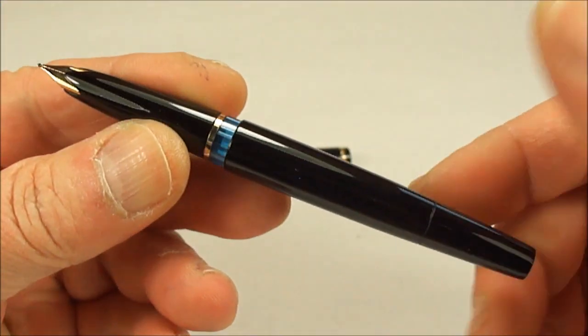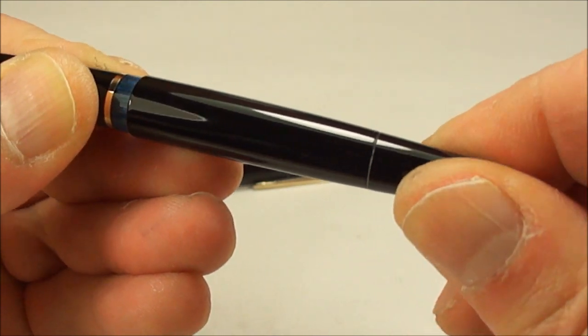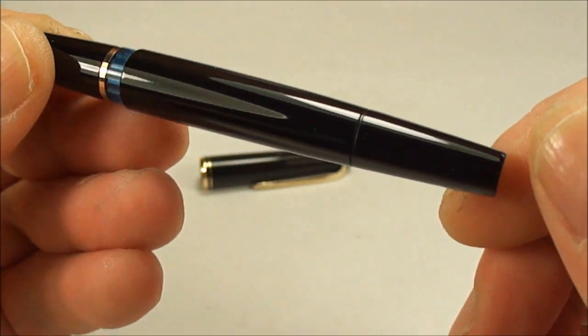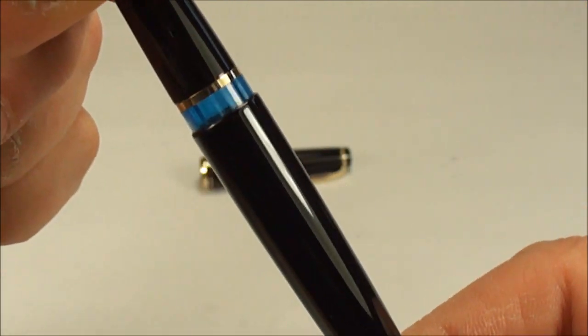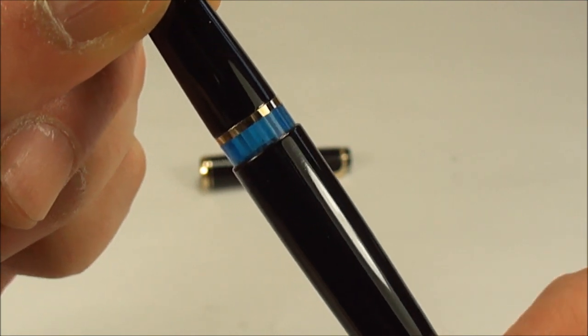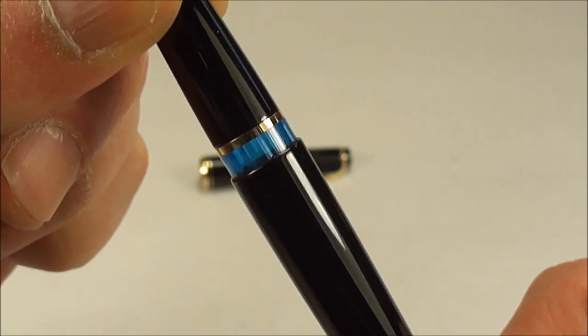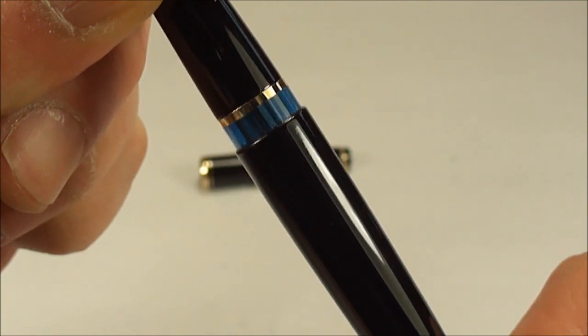As we said earlier, this is a piston filler, which means what we do, we simply, well, say is here, is turn the piston knob at the end here. And then if we show you the ink view, there, and we turn the piston in a moment, we should see—there we go, you can see the piston inside moves all the way to the top.